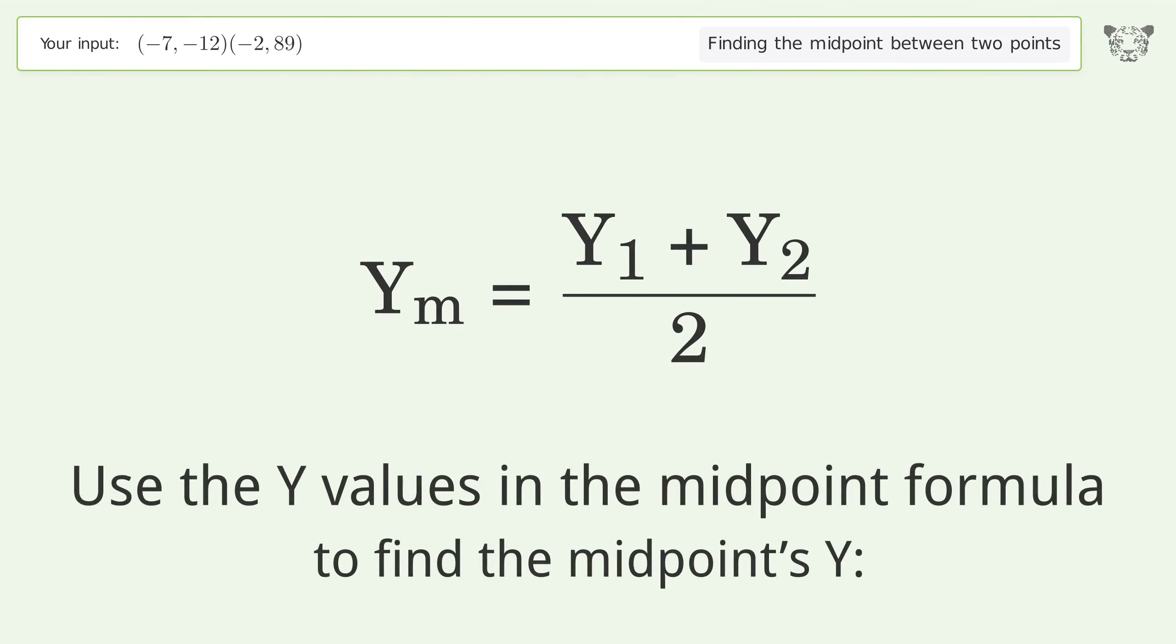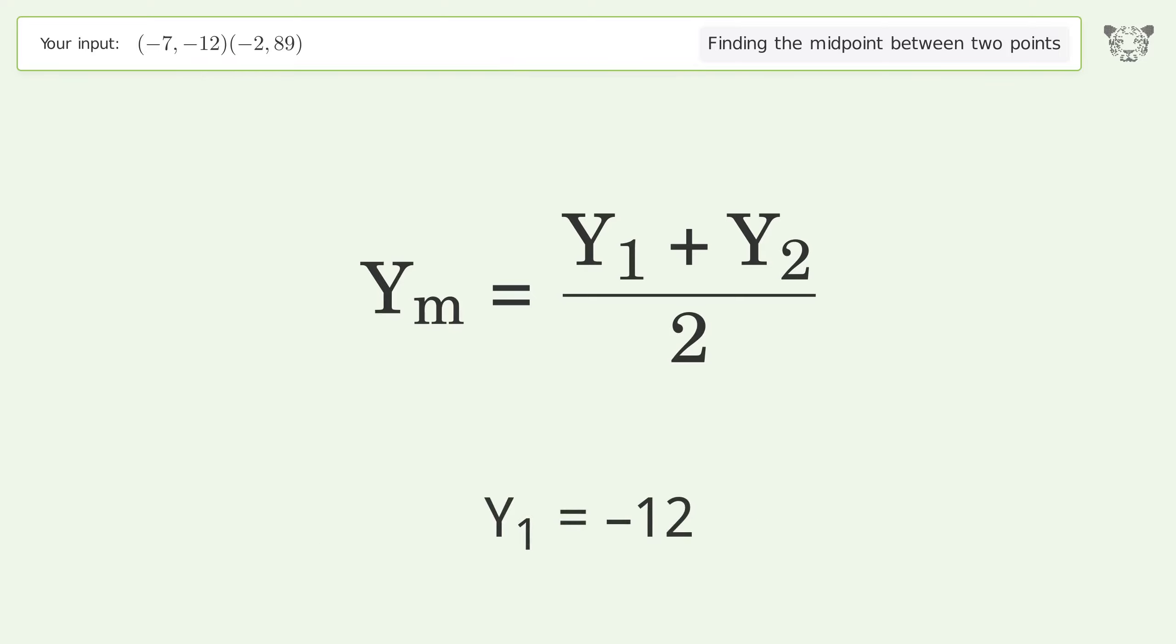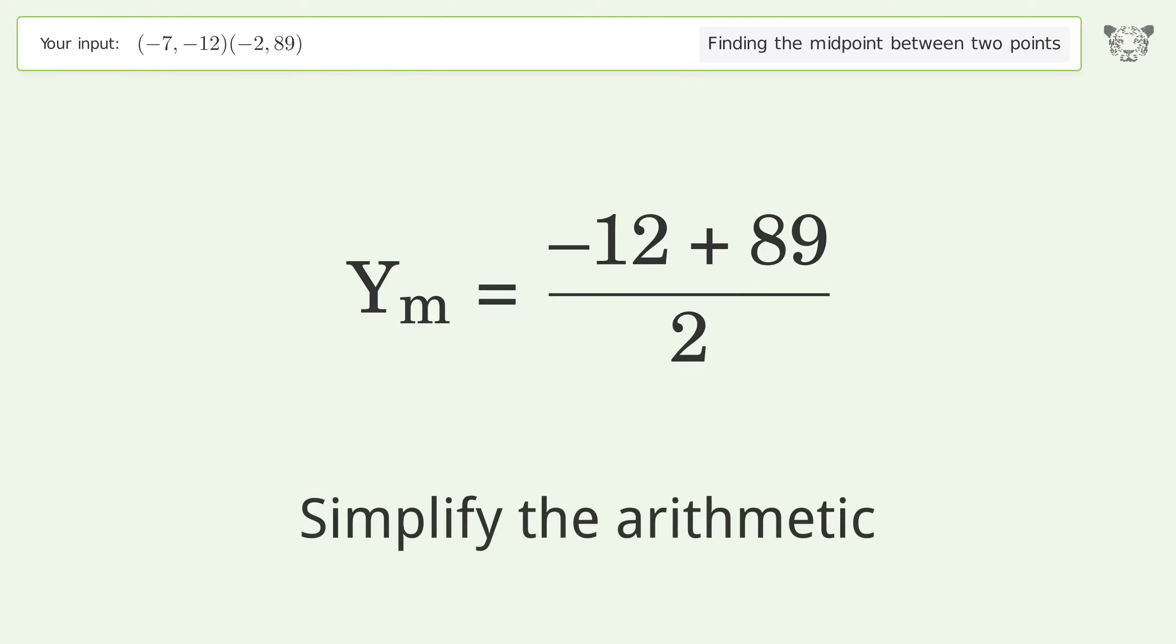Use the y values in the midpoint formula to find the midpoint's y. y1 equals -12, y2 equals 89. Simplify the arithmetic.